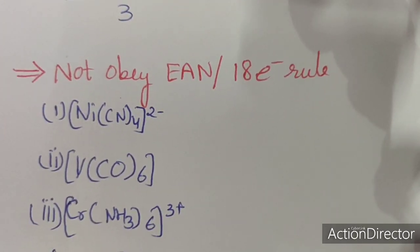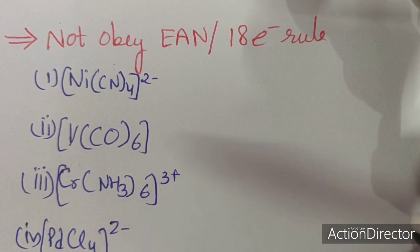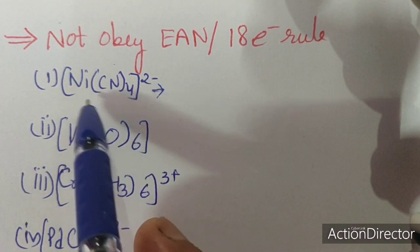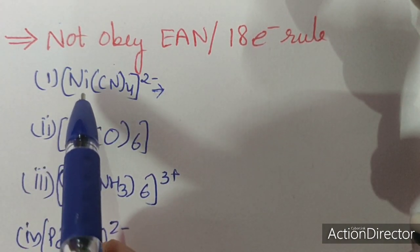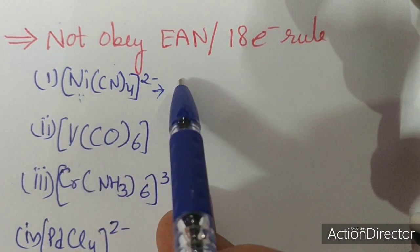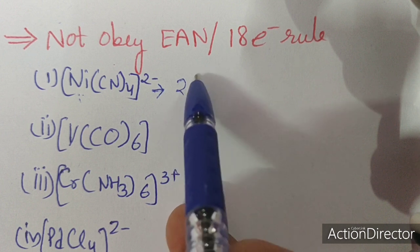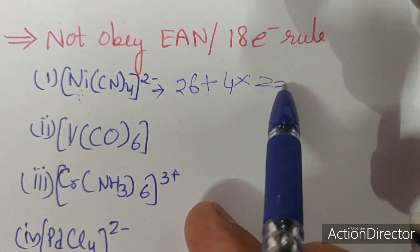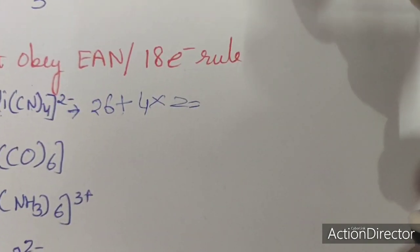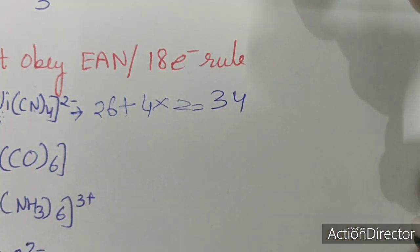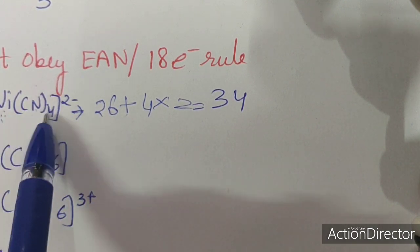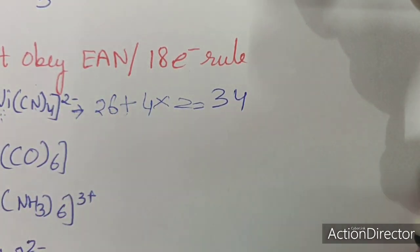Some organometallic compounds do not obey the EAN or 18-electron rule but are still stable — these are exceptional cases. For example, [NiCN4]2−: nickel in 2+ oxidation state has 26 electrons (28 minus 2), and 4 CN ligands donate 8 electrons — total EAN is 34, not 36. For the 18-electron count, Ni2+ has 8 valence electrons and 4 ligands donate 8, giving only 16 — not obeying either rule.